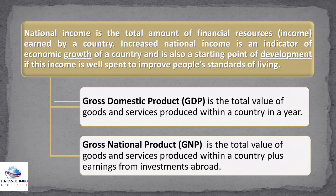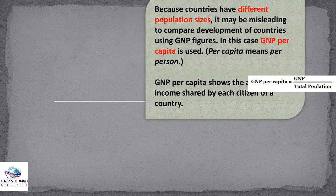National income is divided into two: gross domestic product, abbreviated as GDP, and gross national product, abbreviated as GNP, sometimes GNI which stands for income. GDP is the total value of goods and services produced within a country in a year. GNP is the total value of goods and services produced within a country plus earnings from foreign investments or investments abroad. High GDP figures would mean that the country is more developed.